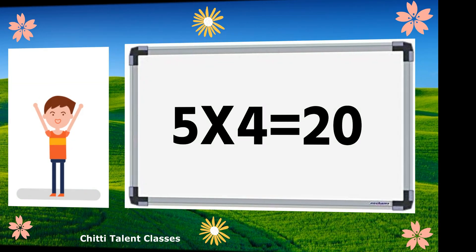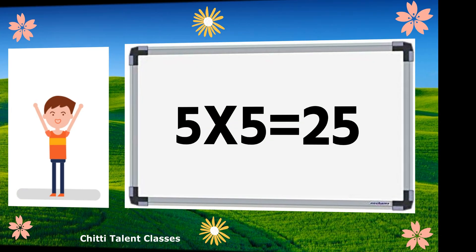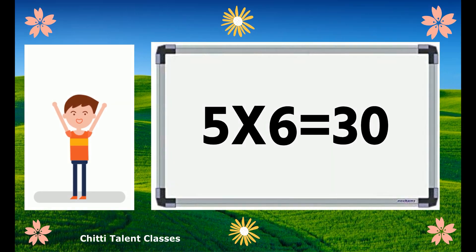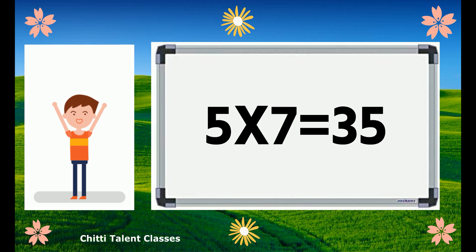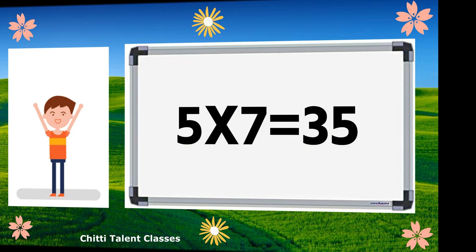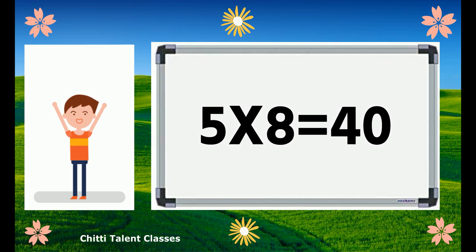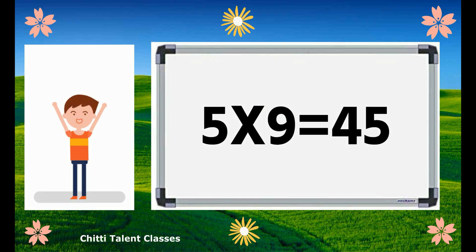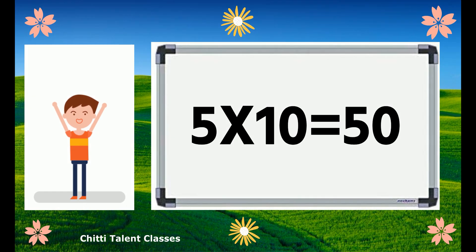Five 4s are 20. Five 5s are 25. Five 6s are 30. Five 7s are 35. Five 8s are 40. Five 9s are 45. Five 10s are 50.